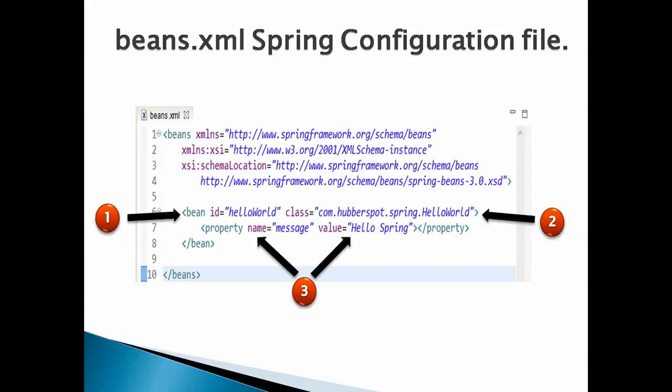Now let's create the Spring configuration file named beans.xml. In order to provide information to the Spring container about the HelloWorld bean and other beans, we create this Spring configuration file. Number 1: this configuration file has a 'beans' tag — this tag holds all the definitions for the Spring beans. The 'beans' tag has a child tag named 'bean', which provides information to the Spring container about each individual bean.